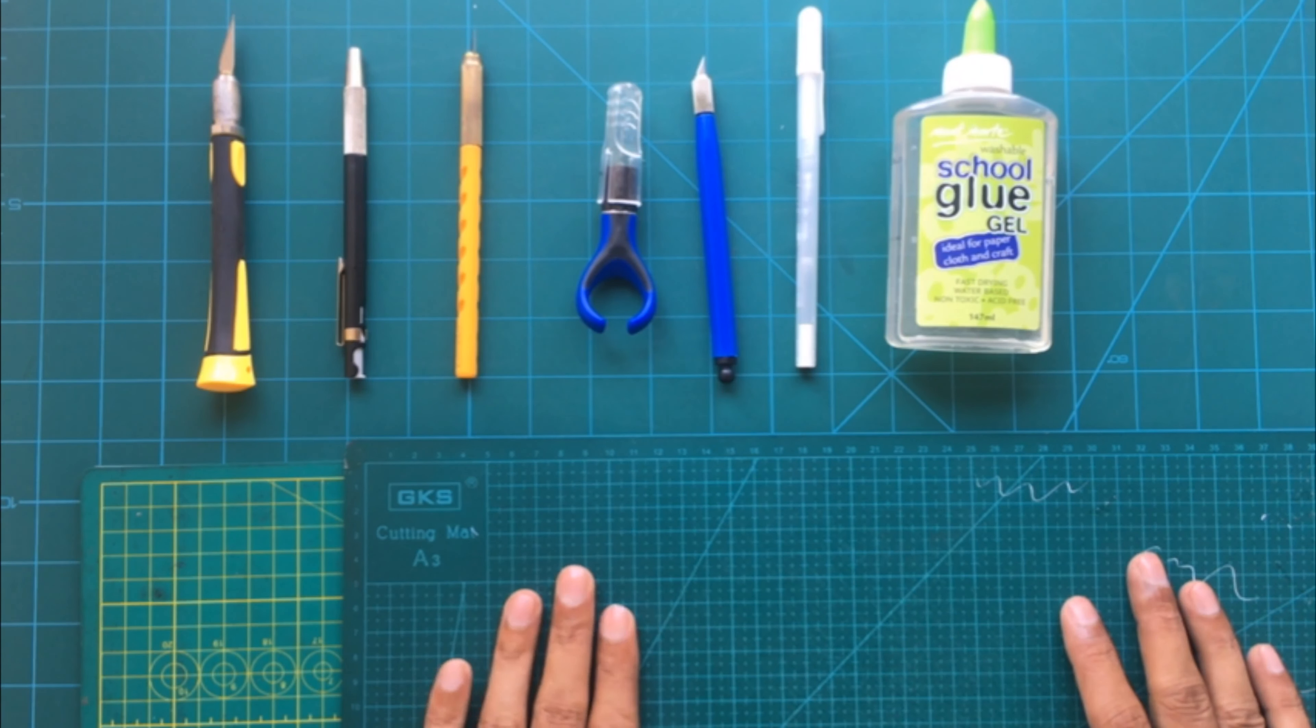Also, if during the paper cutting you accidentally over cut a paper cut, then in that case you can use the transparent glue to stick the parts together back again.